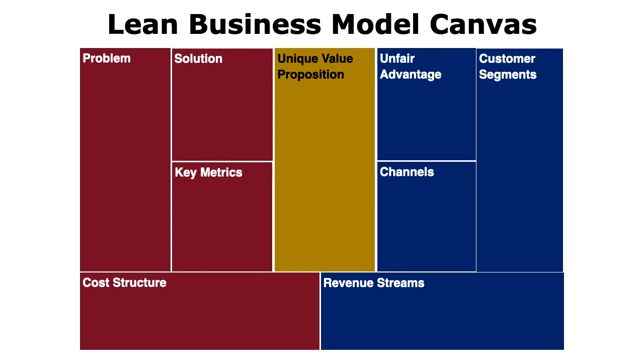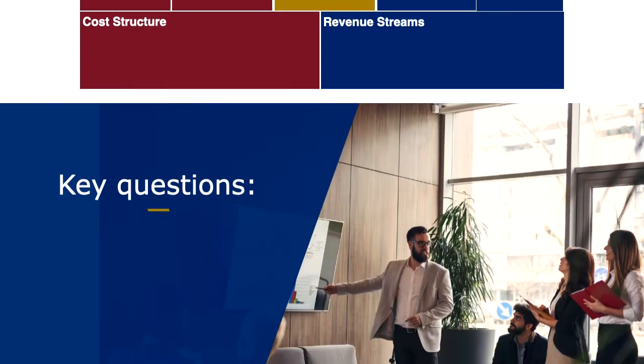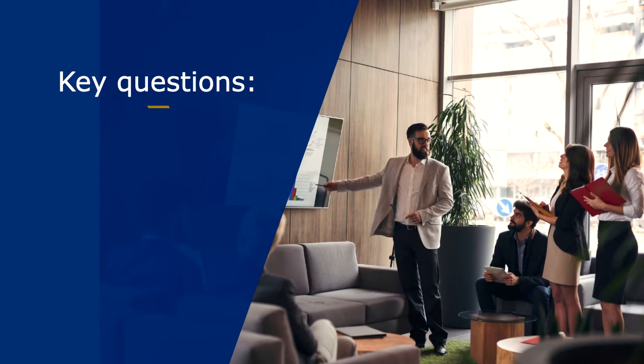Your Lean Business Model Canvas gives a comprehensive view of your business in a concise visual form. When you're pitching, you need to present your business in a format that makes logical sense to a live audience of funders, investors, or partners. That means sharing the same information that's in your Lean Business Model Canvas, but structuring it so it answers three key questions.